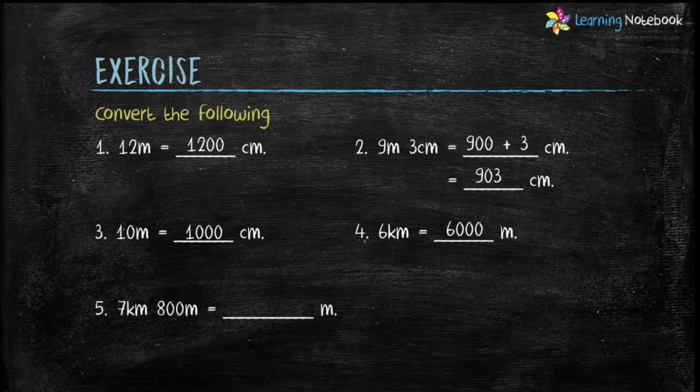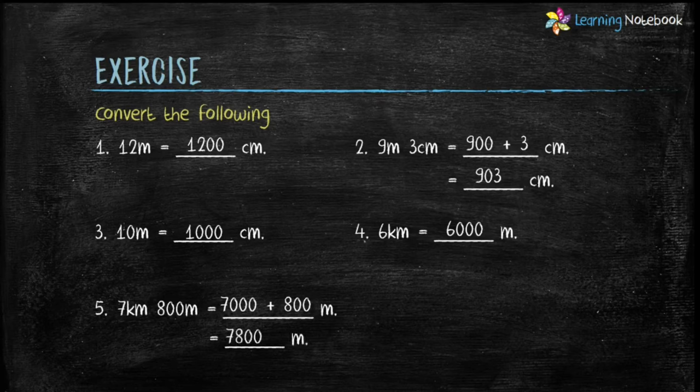Last one: 7 kilometers 800 meters equals to how many meters? 1 kilometer equals to 1000 meters, therefore 7 kilometers equals to 7 into 1000, which equals to 7000 meters. And 7000 meters plus 800 meters equals to 7800 meters.